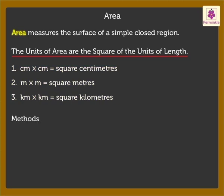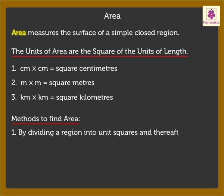There are two methods to find the area. One is by dividing a region into unit squares and thereafter counting the unit squares. The other is by using a formula. Let's learn about each of these in a bit of detail.